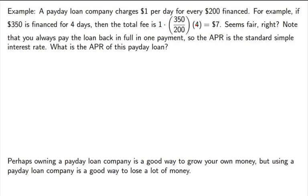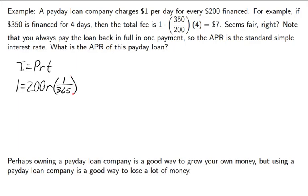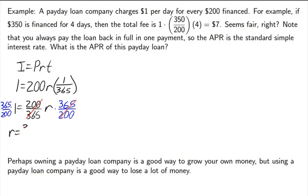Now $7 doesn't seem that bad, but this isn't as honest as it might seem. Let's find the APR. Using the formula I = PRT, with $1 interest paid on every $200 and T equal to one day, which is 1/365 of a year: 1 = 200 × R × (1/365). Multiplying both sides by 365/200, we get R = 365/200 = 1.825.